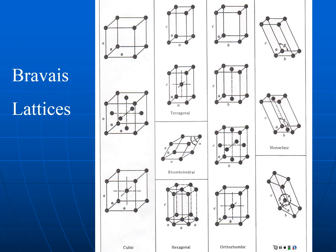These are all the possible crystal structures. In a material science course you would learn all of them, but this is a materials engineering course, and we're focusing on metals where crystal structure gives us the most useful predictive information. We're going to focus on cubic structures and a variety of the hexagonal structure. Most metals are either body-centered cubic, face-centered cubic, or hexagonal close-packed, and all crystals must be one of these structures.